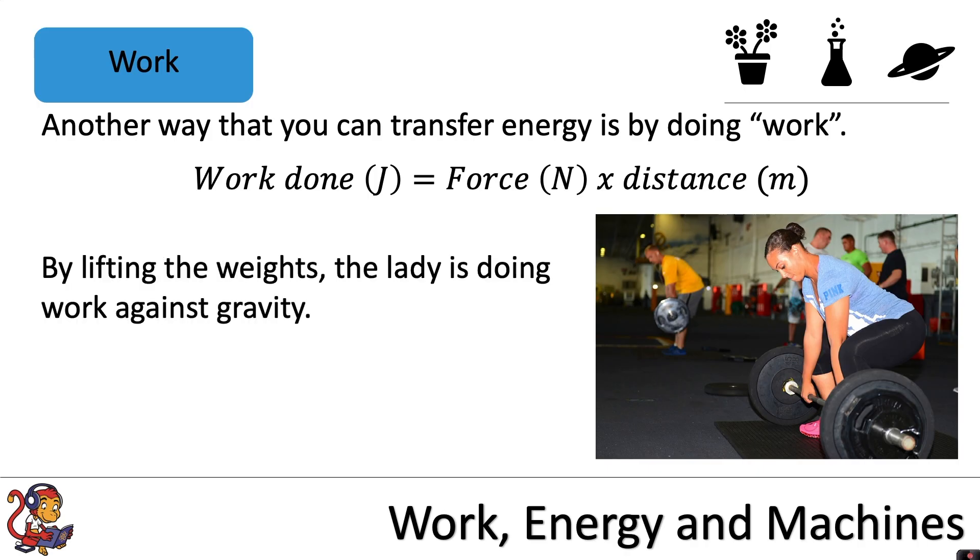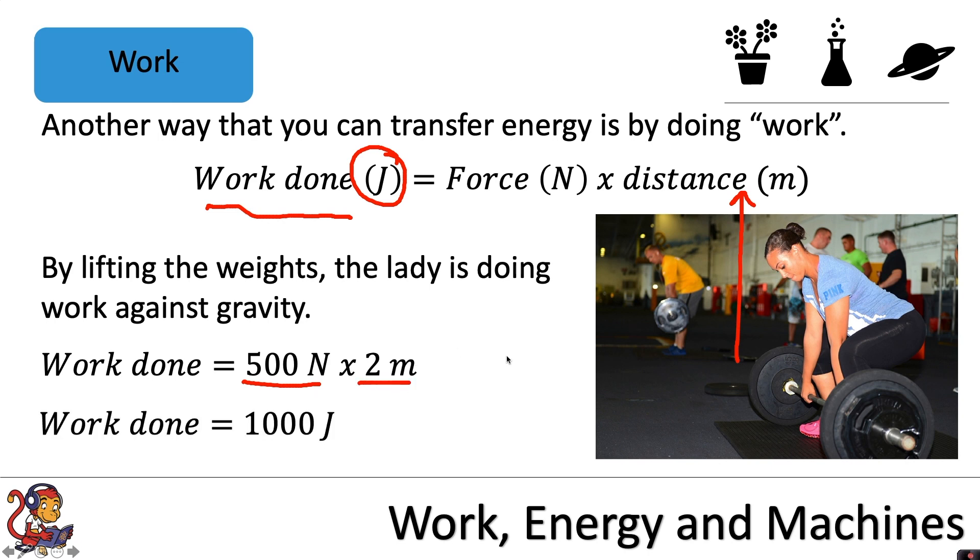For example, by lifting the weights the lady is doing work against gravity. We could calculate the energy that she's transferring, or the work done, by carrying out this equation. For example, if she lifted these weights with a force of 500 newtons upwards for 2 metres, the work done would equal 1000 joules. Or you could equally write that as 1 kilojoules.